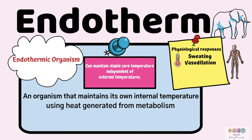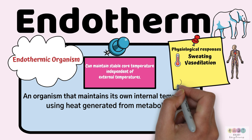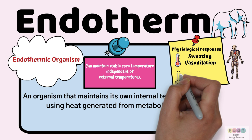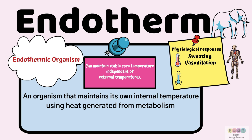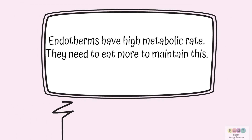The heat comes from their metabolic reactions, but to maintain or regulate it there are certain physiological responses. Like in humans, there would be sweating or vasodilation if they're too hot. And if they get too cold, there's vasoconstriction and piloerection, which is the formation of those goosebumps. Endotherms have a very high metabolic rate to generate all of this heat, so they need to eat more compared to ectotherms.